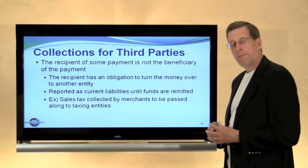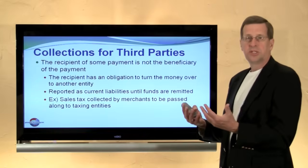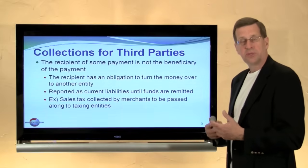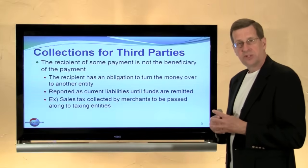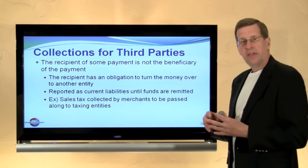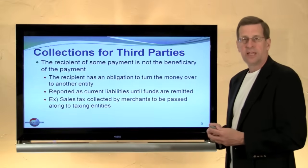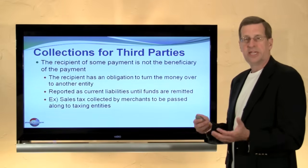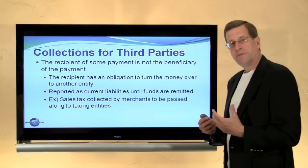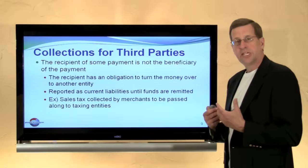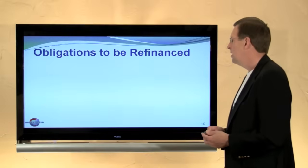The best example would probably be sales tax. When a store sells goods and collects, in addition to the sales price, the sales tax on the transaction, that company has an obligation to in turn remit that sales tax to a city or state taxing organization. So the amount of the transaction reflective of the sales tax would be carried as a current liability.